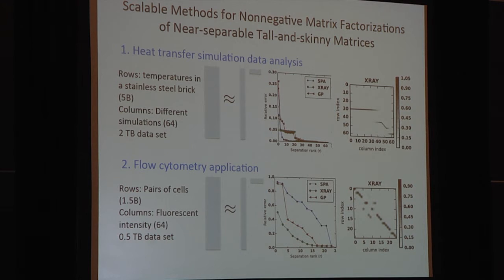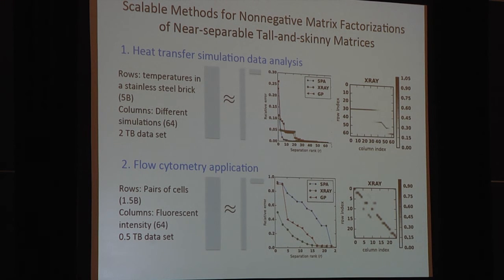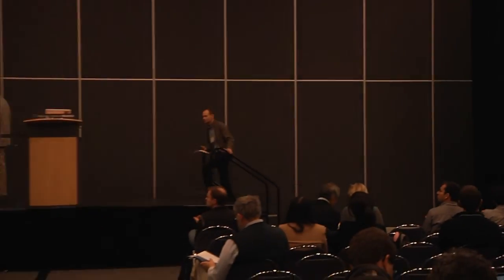We have two applications. The first is a scientific computing application where the rows of the matrix correspond to different points in a stainless steel brick, the columns correspond to different simulations, and the entries correspond to temperatures in those simulations over time. The second application comes from bioinformatics: a flow cytometry application where the rows are pairs of blood cells, columns correspond to bands associated with antibodies, and the data entries correspond to fluorescent intensity at those bands for those cells. These are, in general, terabyte-size matrices. I look forward to seeing you at my poster. This concludes the Spotlight session.